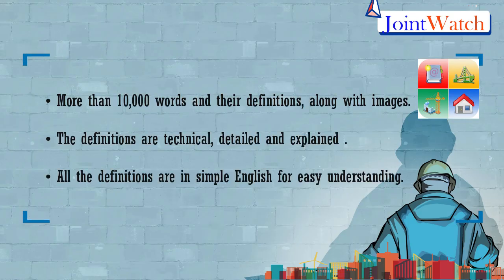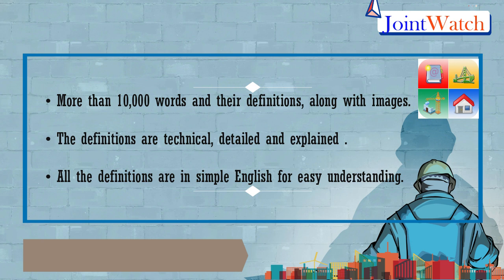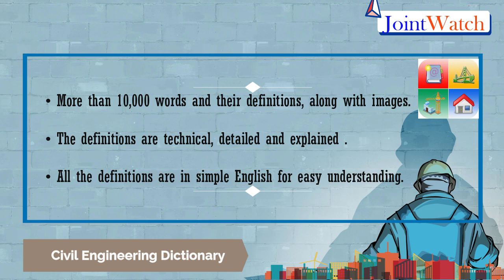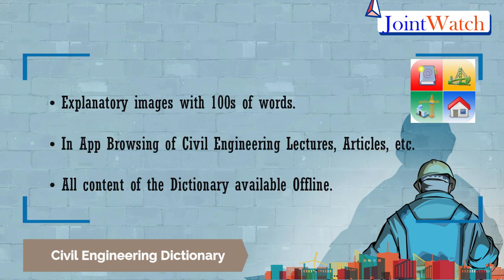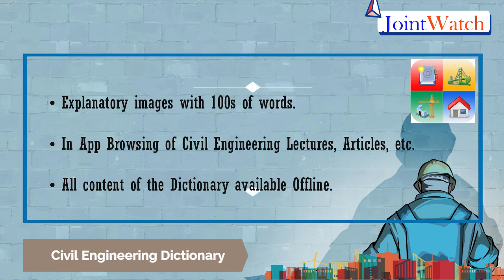The sixth is Civil Engineering Dictionary. Civil Engineering Dictionary is from AboutCivil.org and contains more than 10,000 words and their definitions along with images. The definitions are technical, detailed, and explained according to the civil engineering field. All definitions are written in simple English for easy understanding.